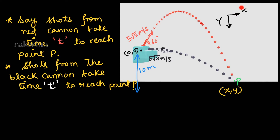We are assuming the x and y directions as follows: positive x is to the right, negative x is to the left, positive y is downward and negative y is upward. Since the shots from both cannons collide at point P, their horizontal and vertical displacements are equal. We will write equations for each direction.